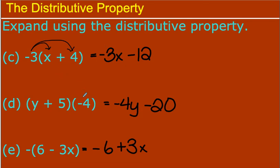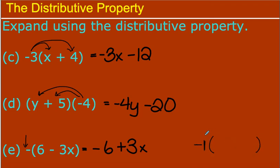In this case, you multiplied negative 4 to the Y and to the 5, getting negative 4Y minus 20. Remember, a negative times a positive gives a negative. Now this one was trickier — you had a negative in front of it. Anytime we put a negative in front of parentheses, it means take the opposite of everything inside. It's just like distributing a negative 1, giving me negative 6X plus — negative 6 plus 3X.